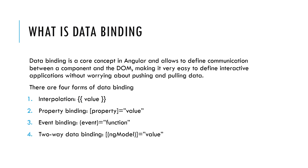What is data binding? Data binding is the core concept in Angular and allows us to define the communication between the components and the DOM. There are four forms of data binding: interpolation, property binding, event binding, and two-way data binding.